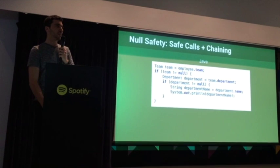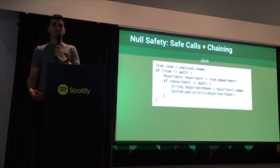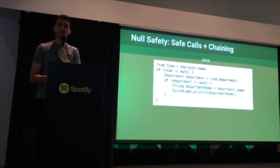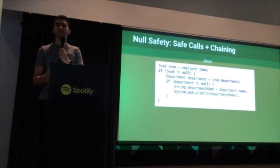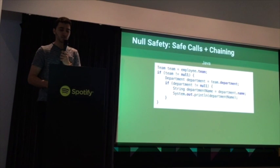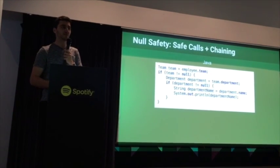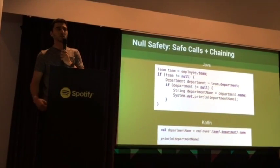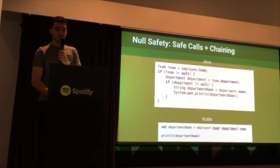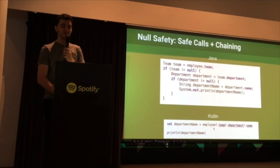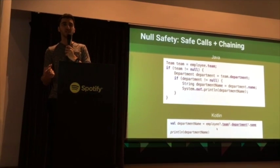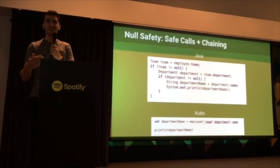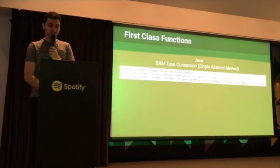We have a lot of this kind of code in our Android app — basically a bunch of nested objects where we only want to do something if all of the objects are not null. In Java you pretty much end up with a nested block of if statements. In Kotlin, you can do the exact same thing in one line just by chaining the null-safe operator. If any of the objects in the chain are null, the expression will stop executing and the result would just be null.